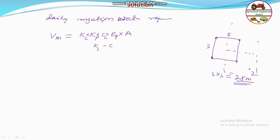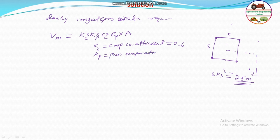Kc is the crop coefficient; in this case it is given as 0.6. The crop coefficient accounts for soil conditions and crop transpiration, reducing the daily evaporation figure. Kp is the pan evaporation coefficient, given as 0.8. The daily pan evaporation Ep is given as 6mm.